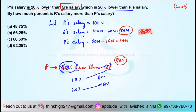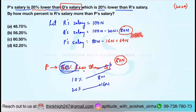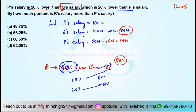20% of 80N is a value which is 16N. Since P's salary is less than Q's salary, you subtract it. So P's salary is 80N minus 16N = 64N. Clear right now? Yes, understood.